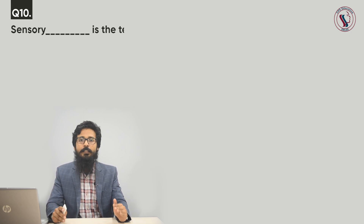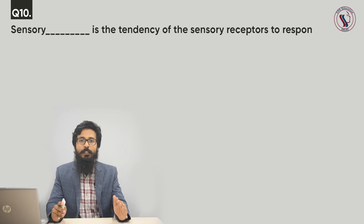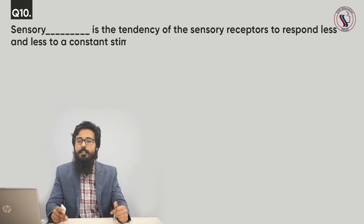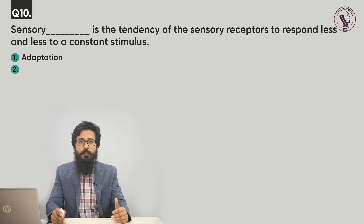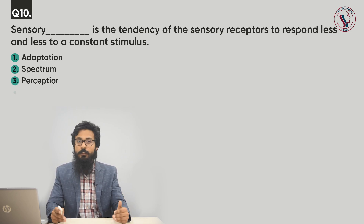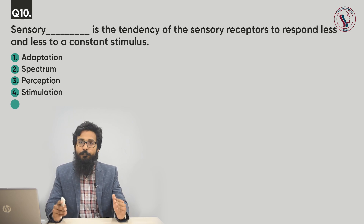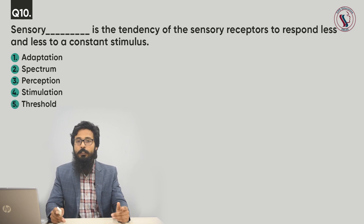Question number ten. Sensory fill-in-the-blank is the tendency of the sensory receptors to respond less and less to a constant stimulus. Options: adaptation, spectrum, perception, stimulation, threshold. The correct answer is adaptation. Sensory adaptation is the tendency for our sensitivity to decrease over time to an unchanging stimulus.